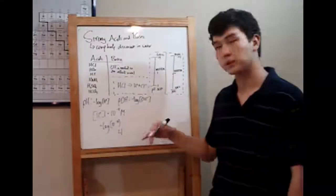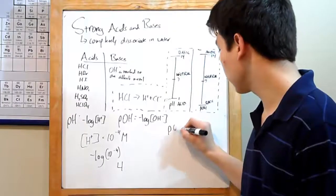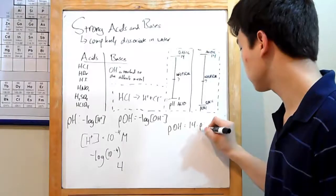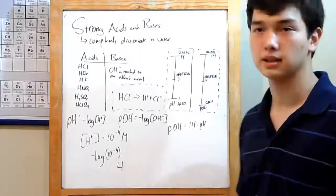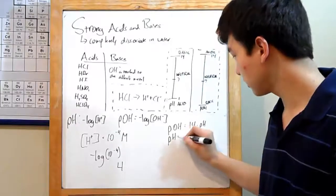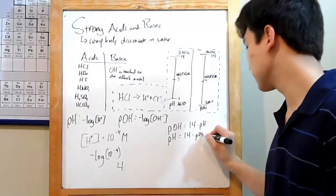Using that, you could actually come up with a pOH for the same solution. The pOH, if you already know the pH, is 14 minus pH. In this case, 14 minus 4, that's just 10. Similarly, you could define pH as 14 minus the pOH. The two will always add up to 14.